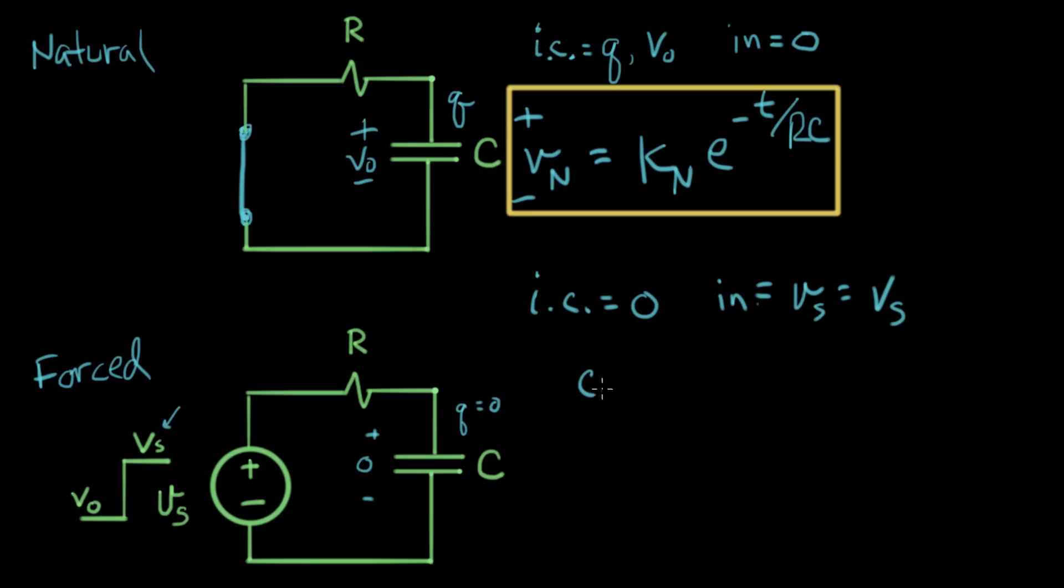And that is C times dV/dt, and I'll put a forced in here, plus one over R times V forced equals one over R times VS. And I can plug in capital VS here because we're trying to solve this for this initial condition. So, this is our differential equation for the forced response.